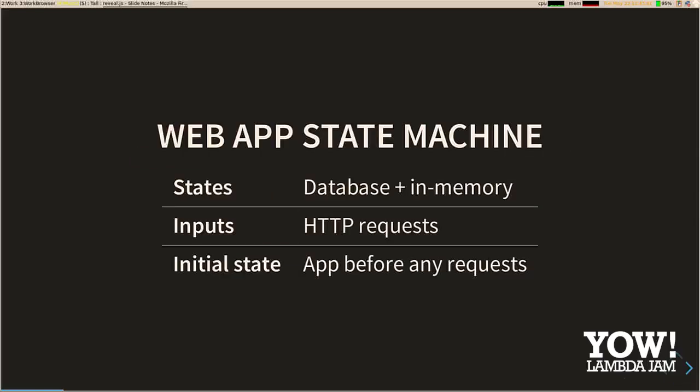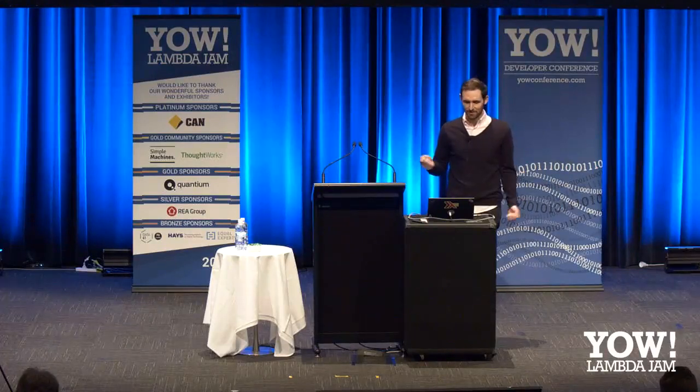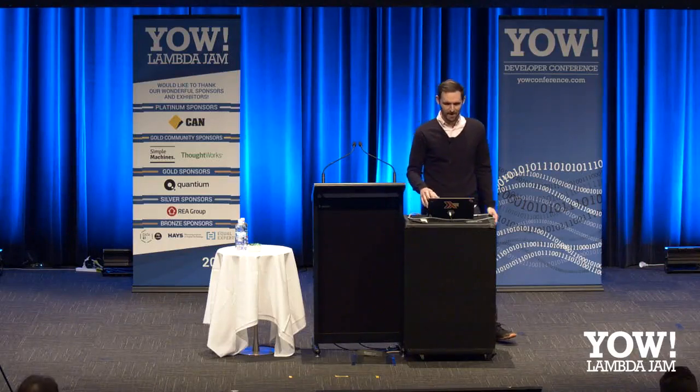So what does a web application look like as a state machine? Our states will be the various states of the database and any in-memory stuff we're storing. The inputs will be HTTP requests — when we send a request to a web application, often we're hoping its state will change. And the initial state will be the application before we've sent any requests: an empty database and all that sort of stuff.